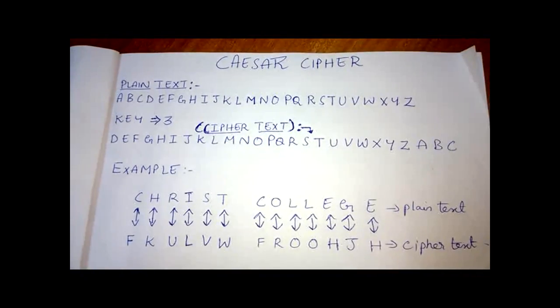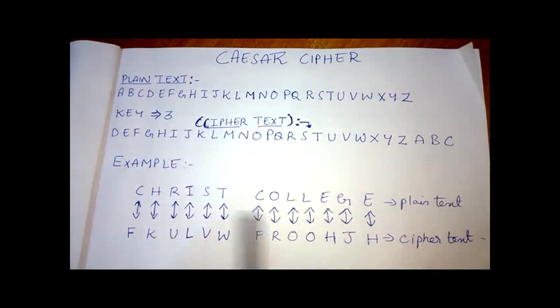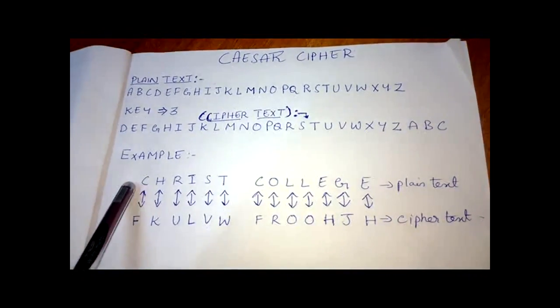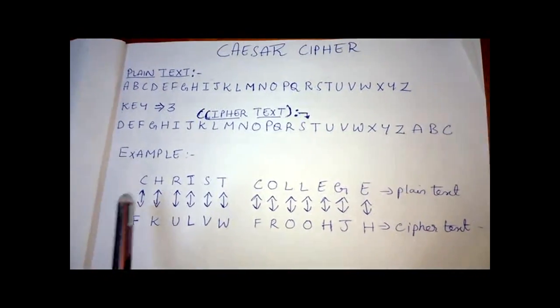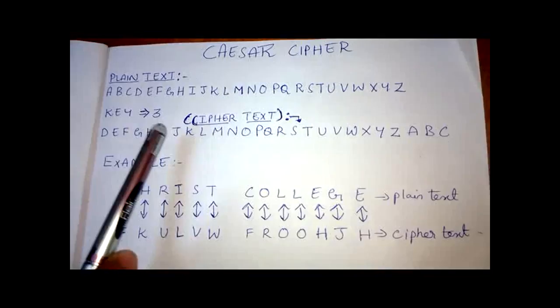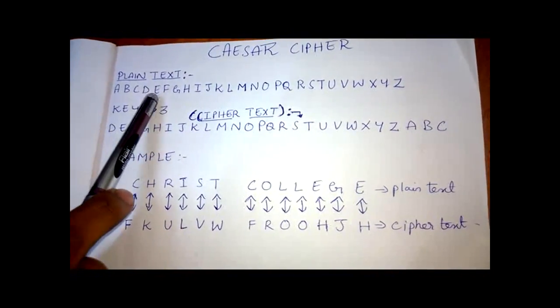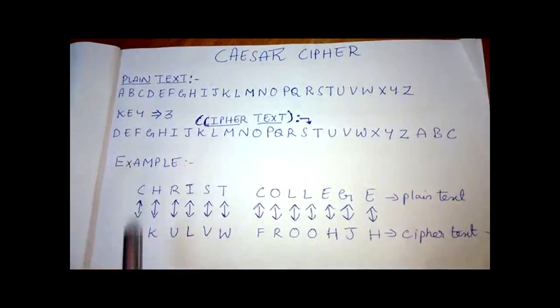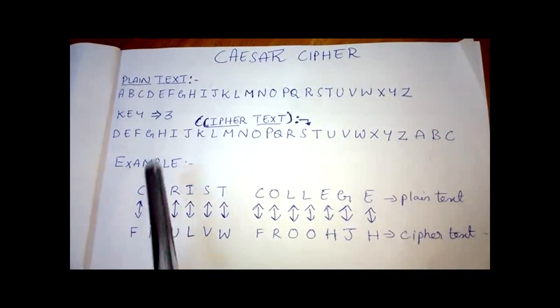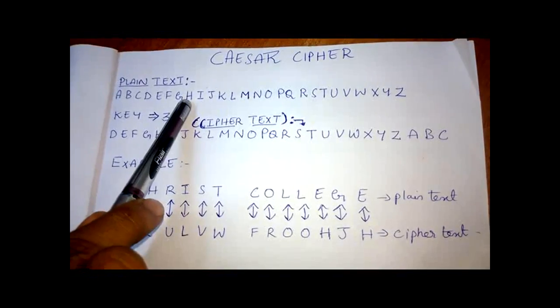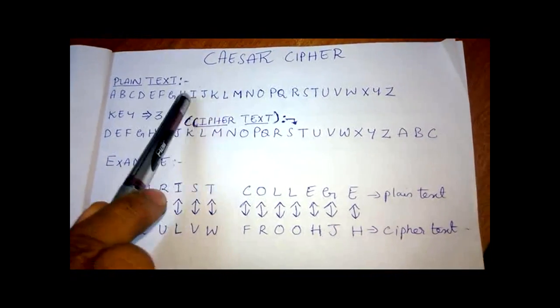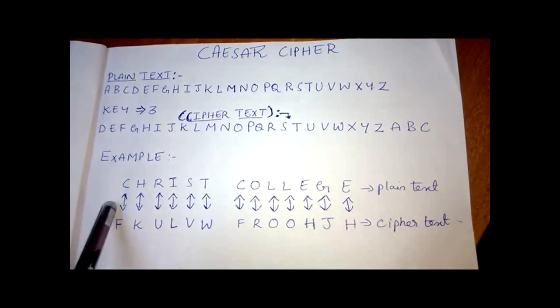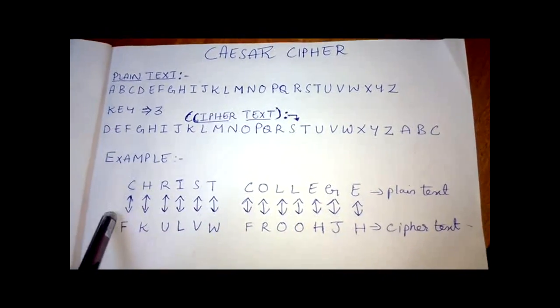For example, I will take Christ College as the word which I need to encrypt. So the encryption follows like this. I will take the first alphabet C and encrypt in such a way. So key value is equal to 3. So we choose that 1, 2, 3. So C is represented as F in an encrypted form. C is equal to F and H is moved in front 3. 1, 2, 3. H is represented as K. And it goes on to the whole text and the encrypted text is found here.